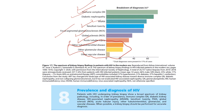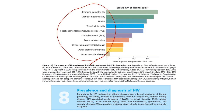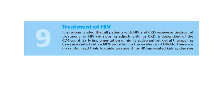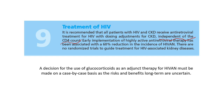Kidney biopsy is very important in patients with HIV and renal injury to identify which spectrum is the cause, so therapy can be targeted appropriately — because it is not only HIV-associated nephropathy that may occur when there is HIV plus kidney disease. Regarding treatment of HIV: antiretroviral therapy is recommended for all patients regardless of CD4 count. Glucocorticoids as adjuvant therapy can be used on a case-by-case basis, weighing the risks and benefits.